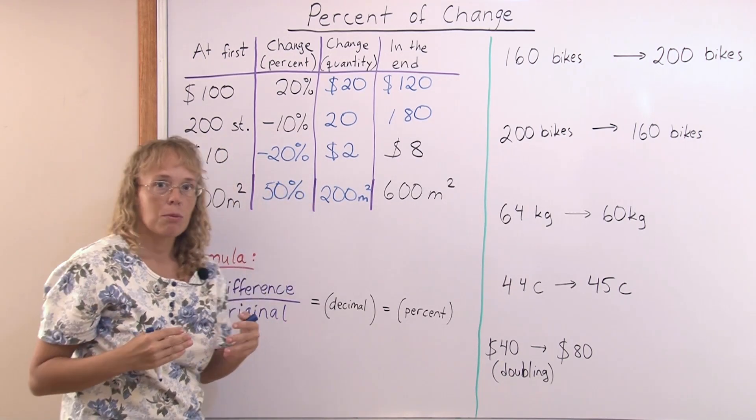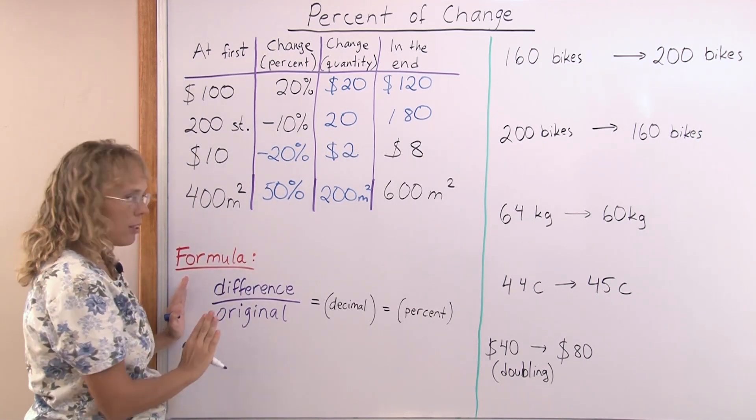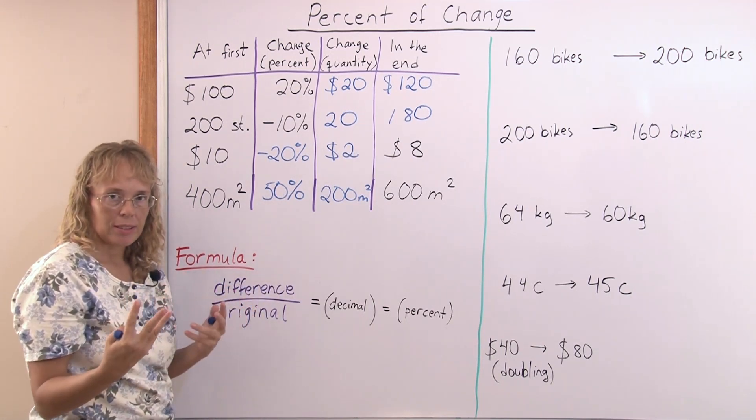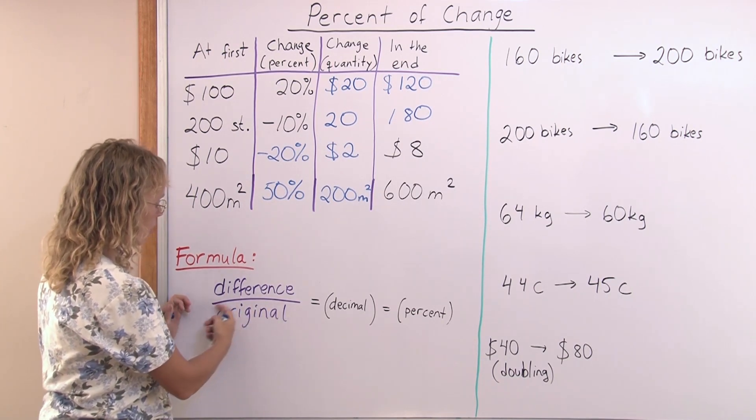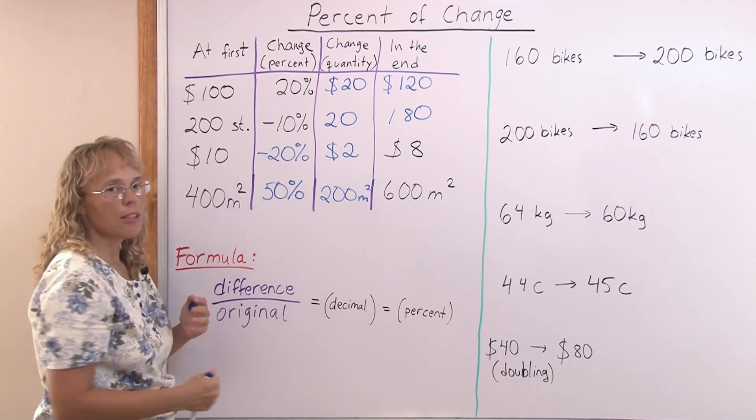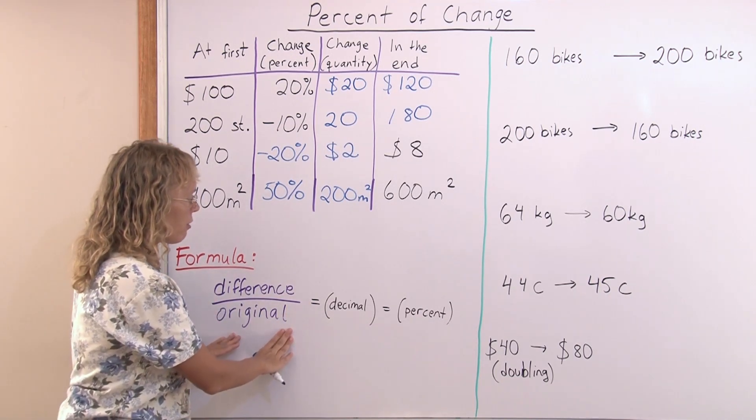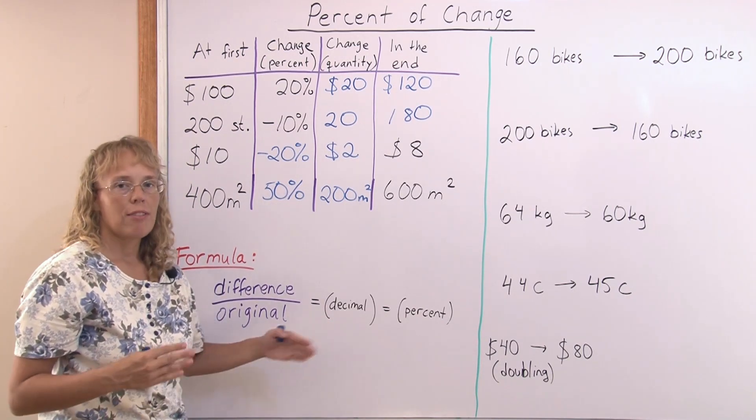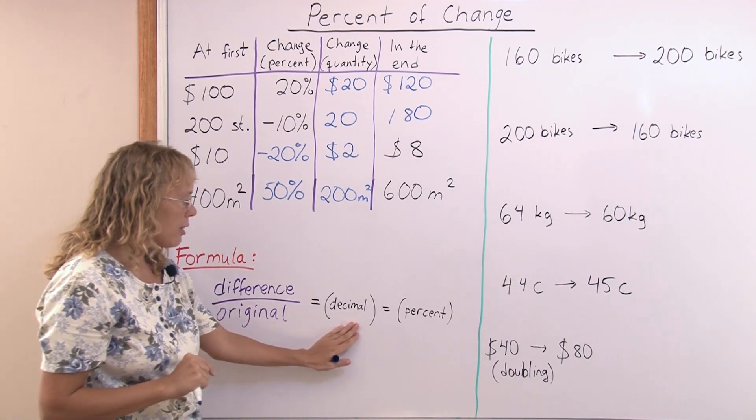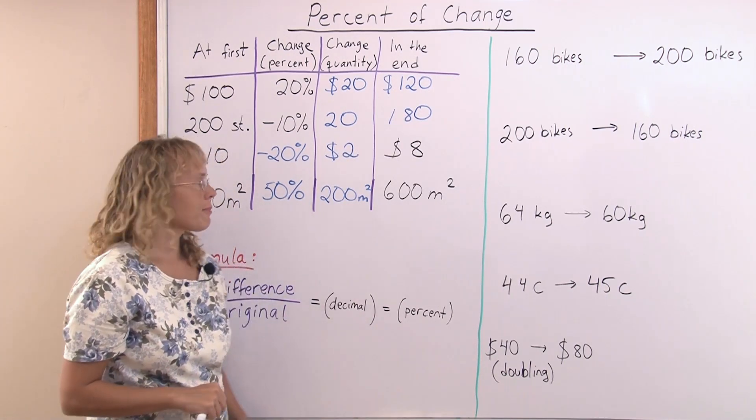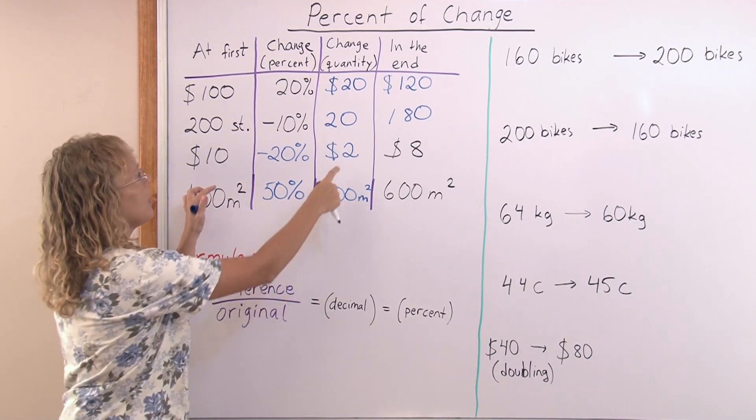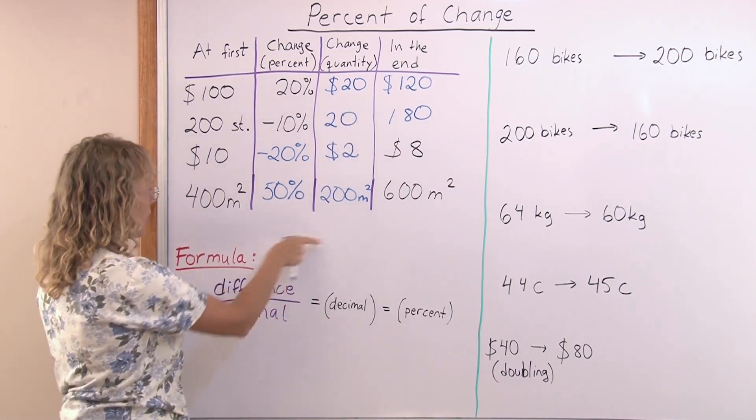As a formula, we give it like this. To find the percent of change, first think of the difference between the original and the final quantities, and then divide that by the original quantity. This gives you a fraction, of course. A number divided by a number. And then change that fraction into a decimal number, either by dividing with a calculator or dividing with a long division. You get a decimal number, and then just write the decimal as a percent. So the formula is very simple. Remember, you need to look at the difference in the quantities and divide that by the original.